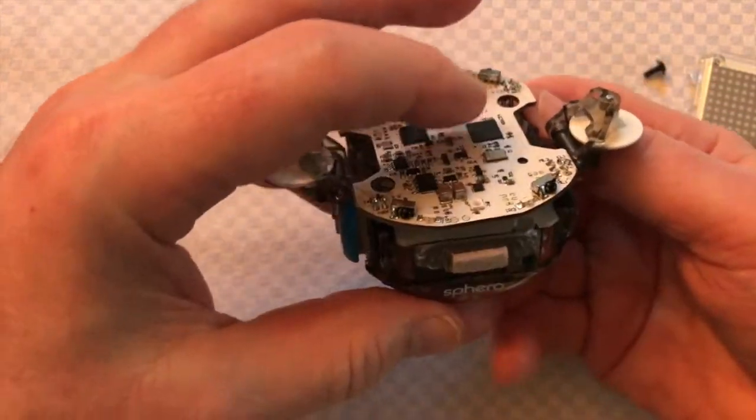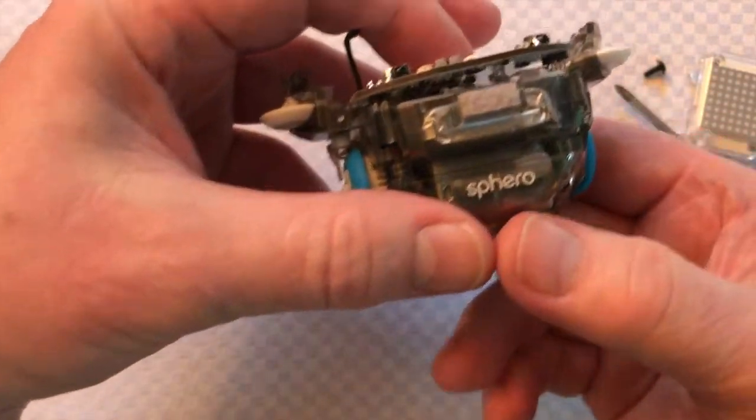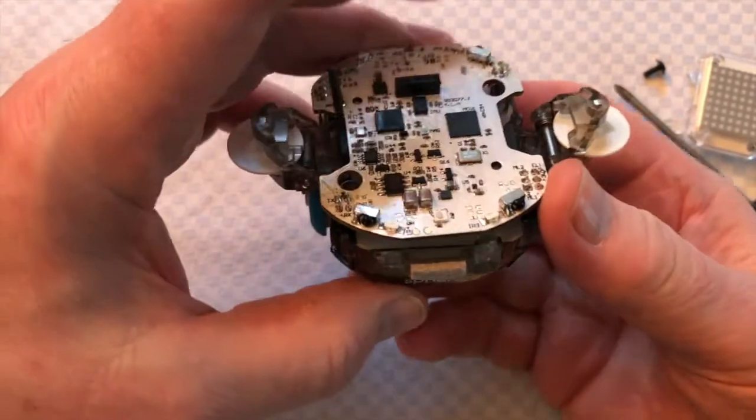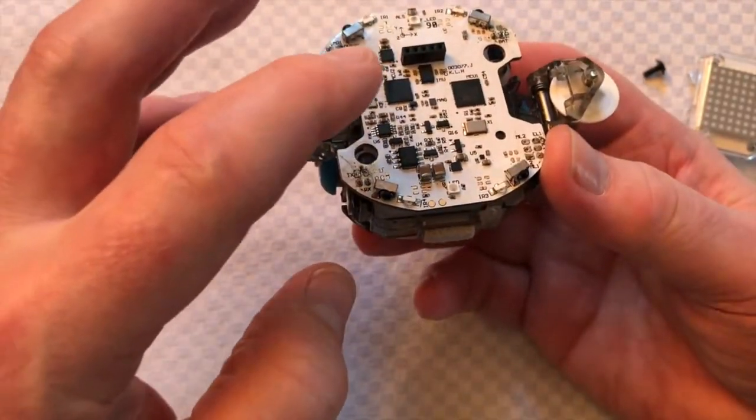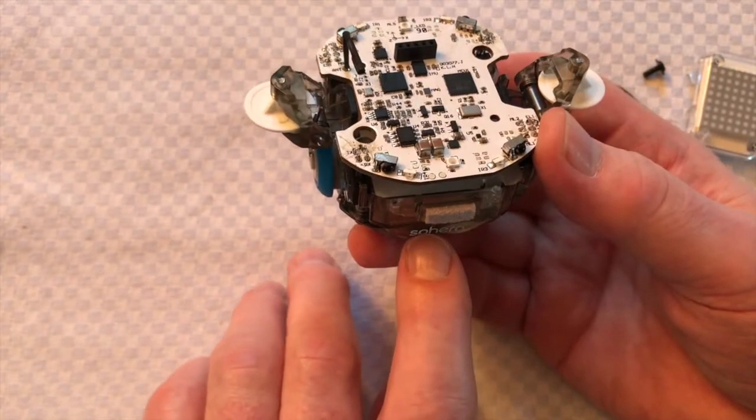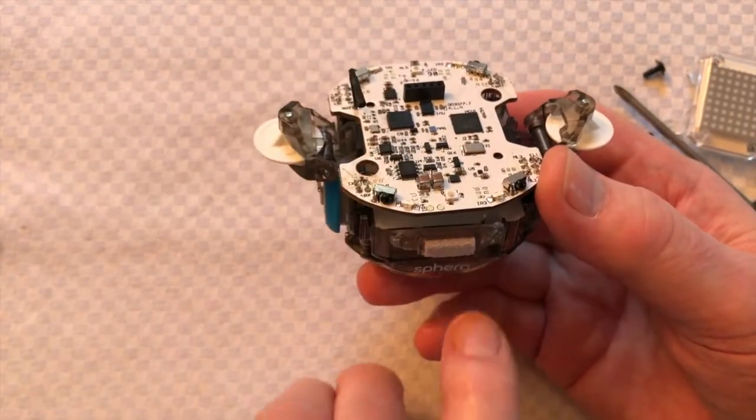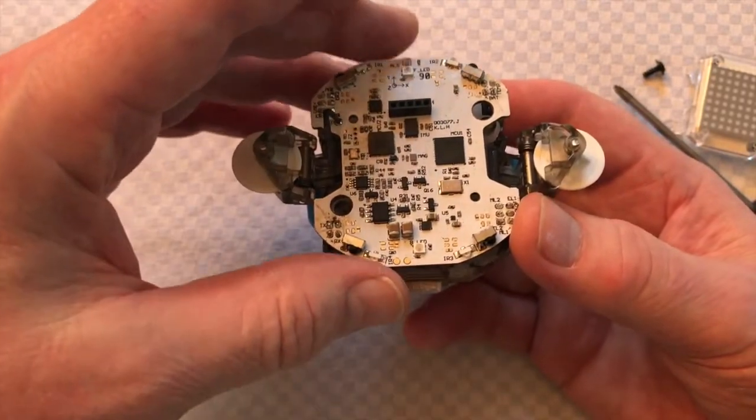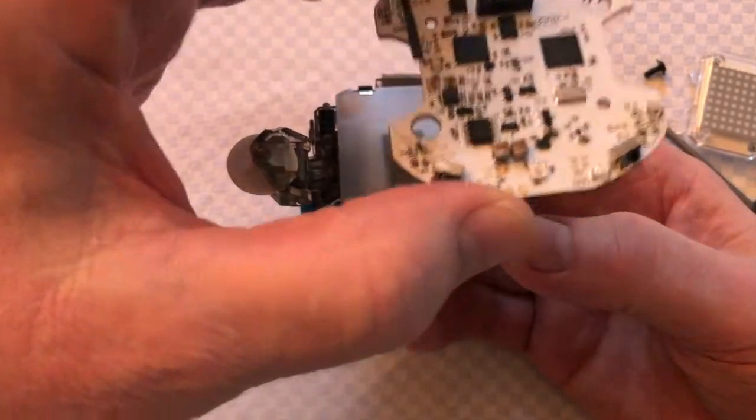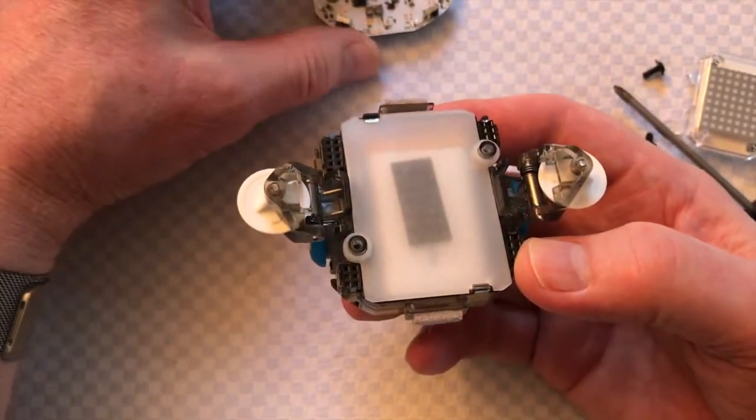One of the things to note before you lift it off is that there's a word Sphero on there, and the aerial is pointing towards the word Sphero. The tip of this aerial points to there. You want to make sure it goes back in the same way because it will go back in the other way.